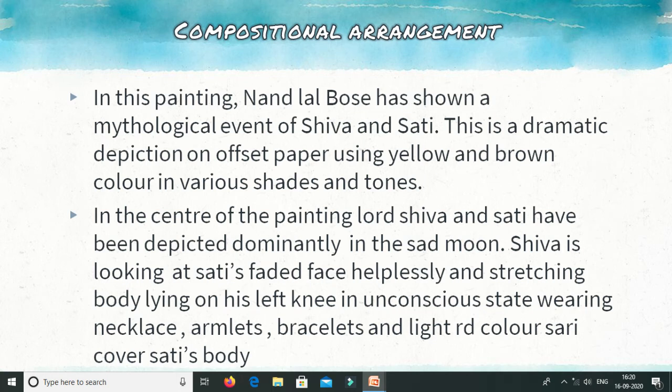In the center of the painting, Lord Shiva and Sati have been depicted dominantly, in a sad mood. If you look at their facial expressions, Sati Ji has been lifeless and Shiva Ji is in a very sad mood. Shiva is looking at Sati's faded face helplessly, stretching both arms to support Sati's body, which is lying on his left knee in an unconscious state.